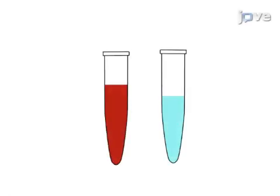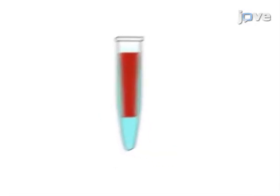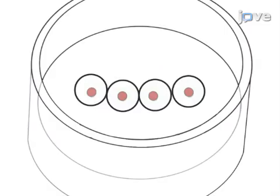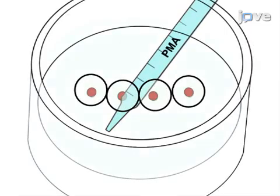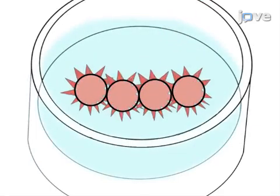This is achieved by first isolating neutrophils from human whole blood using differential centrifugation. As a second step, isolated neutrophils are stimulated with PMA to induce NET formation, also called NETosis.